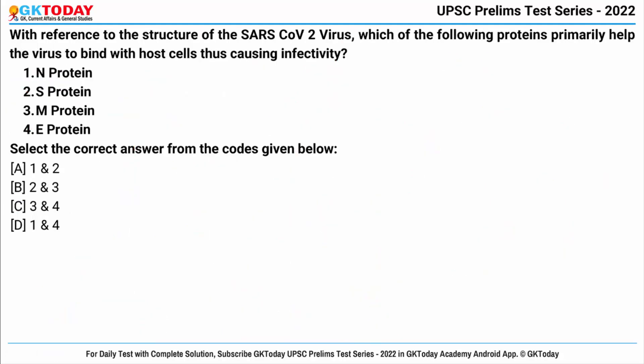Next question: with reference to the structure of SARS-CoV-2 virus — Severe Acute Respiratory Syndrome Coronavirus 2 — which of the following proteins primarily help the virus to bind with host cells, thus causing infectivity?